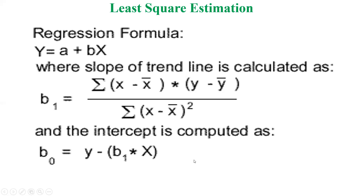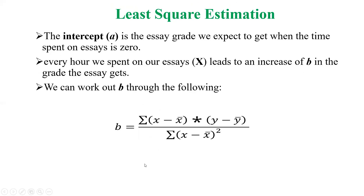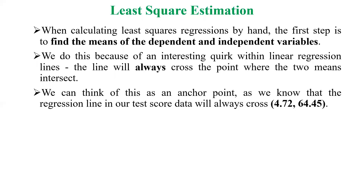Using an essay grade example: the intercept is the expected grade when time spent on essay is zero. Every hour spent on the essay leads to an increase of b in the grade. To compute b, we apply the formula Σ(x − x̄)(y − ȳ) / Σ(x − x̄)². When calculating least square regression by hand, the first step is finding the means of both dependent and independent variables.